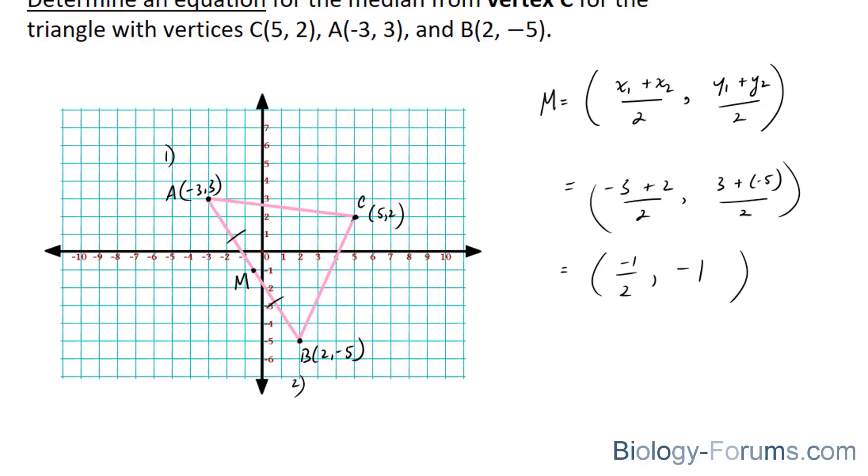So what we have to do next is create a line segment equation that connects M to C. And the way we do that is we use the skeleton for a line equation, which is y equals mx plus b, where m signifies the slope and b signifies the y-intercept.